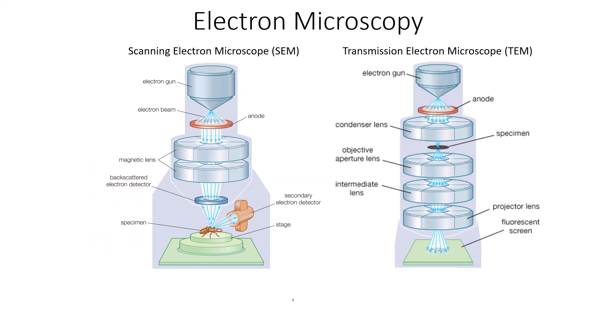Electron microscopy is a more recent microscopy technique. There are two versions: the scanning electron microscope and the transmission electron microscope. Both utilize electrons as their energy source instead of light, giving better resolving power and magnification. The scanning electron microscope uses beams of electrons to strike the surface of a specimen, and a detector connected to a computer takes all the data from those electrons bouncing off and provides a three-dimensional image.